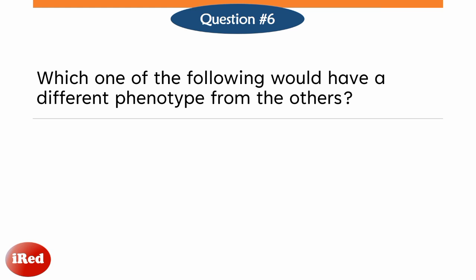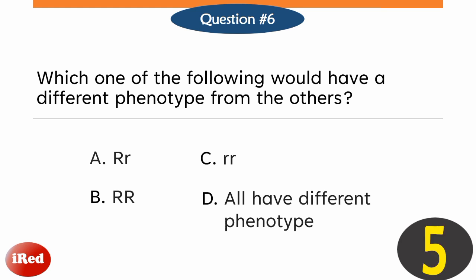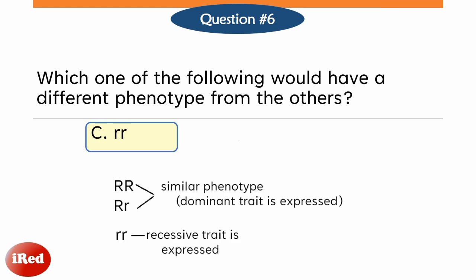Which one of the following would have a different phenotype from the others? The correct answer is letter C. Homozygous dominant and heterozygous dominant would have the same phenotype, as both have dominant alleles. This allele will be expressed in both organisms resulting in similar phenotypes — the dominant trait. Whereas in a homozygous recessive genotype, the recessive trait is expressed since the organism carries two identical copies of the recessive allele.